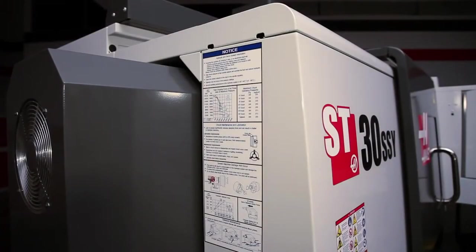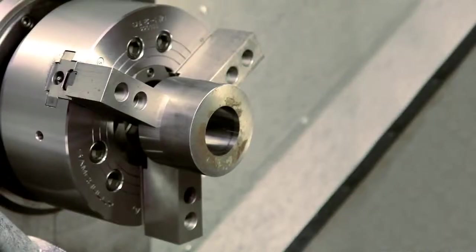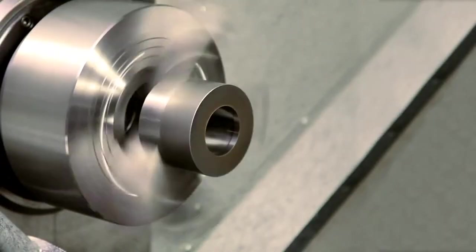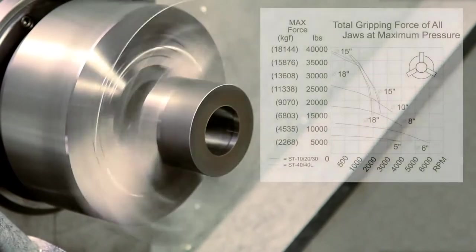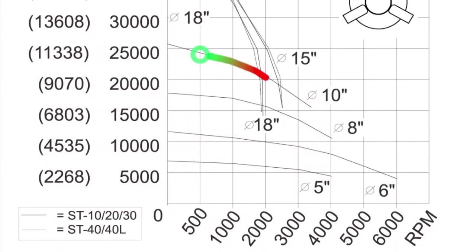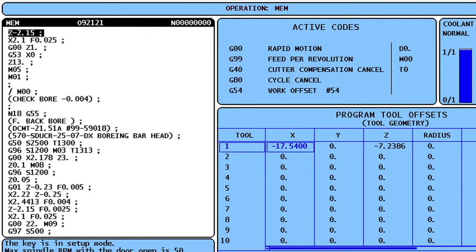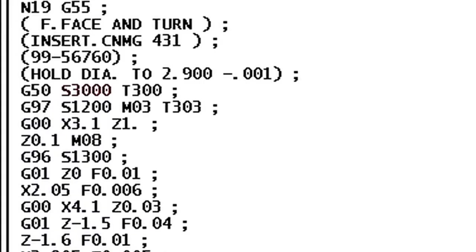It's a good idea to reference the chart posted on the side of your machine. Remember, spindle speed also affects outside diameter holding force. Centrifugal force pulls the jaws away from the workpiece and reduces gripping force as spindle speeds increase. Set your chuck pressure based on the highest rpm in your program.